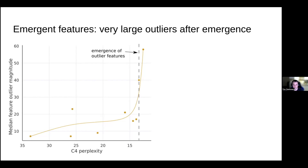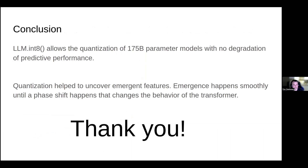To conclude: we have shown that with LLM int8 — this two-part quantization method — we can quantize very large models of 175 billion parameters with no degradation of performance, making these large models much more accessible. We have also shown that with quantization, we can uncover emergent features and try to understand them in those models. Our work is the first to show we can understand emergence by directly looking at the transformer. Happy to take your questions.